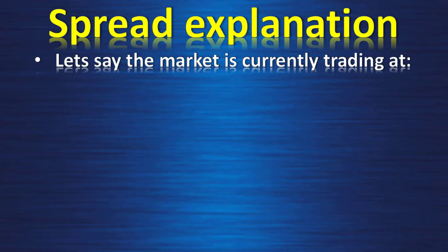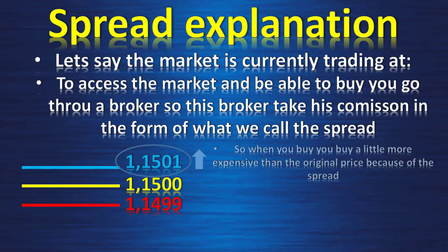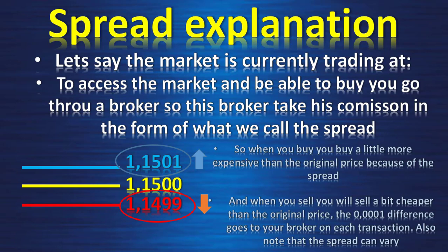Let's say the market is currently trading at 1.15. To access the market and be able to buy, you go through a broker. This broker takes its commission in the form of what we call the spread. When you buy, you buy a little more expensive than the original price because of the spread — the difference between the original price 1.15 and 1.1501.